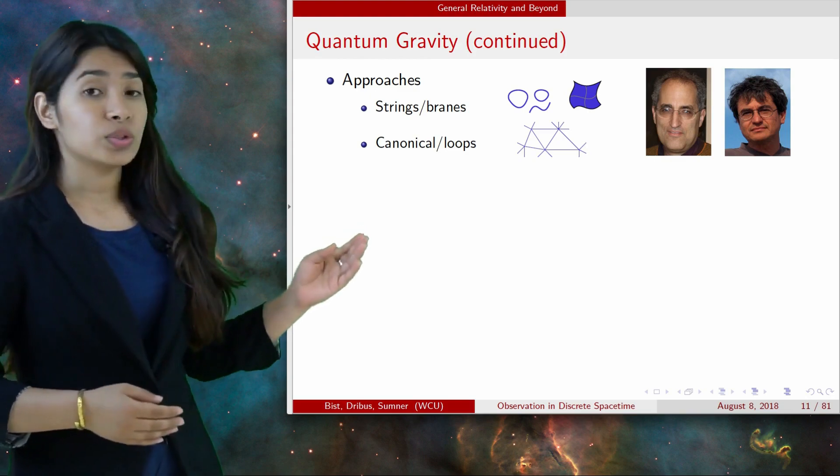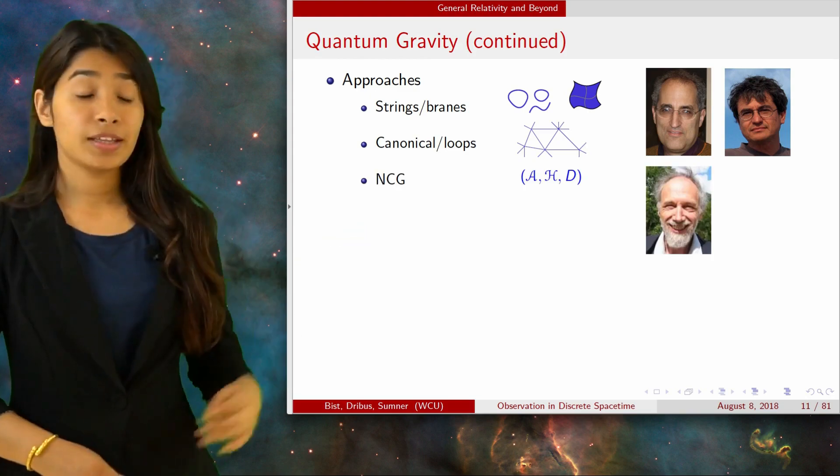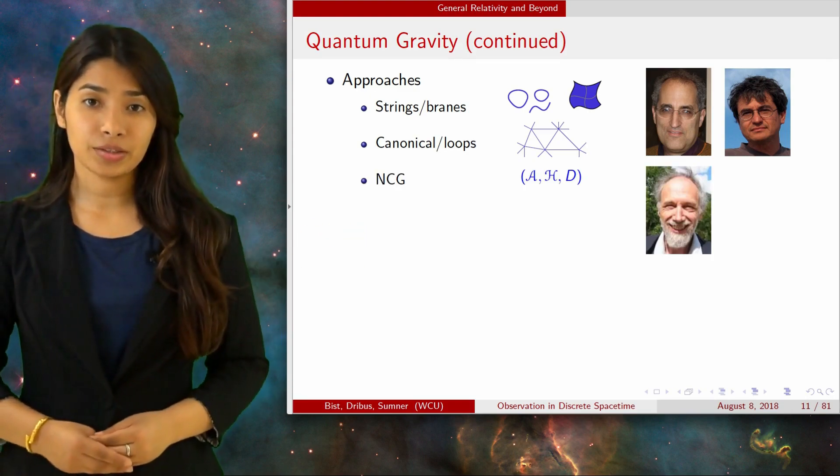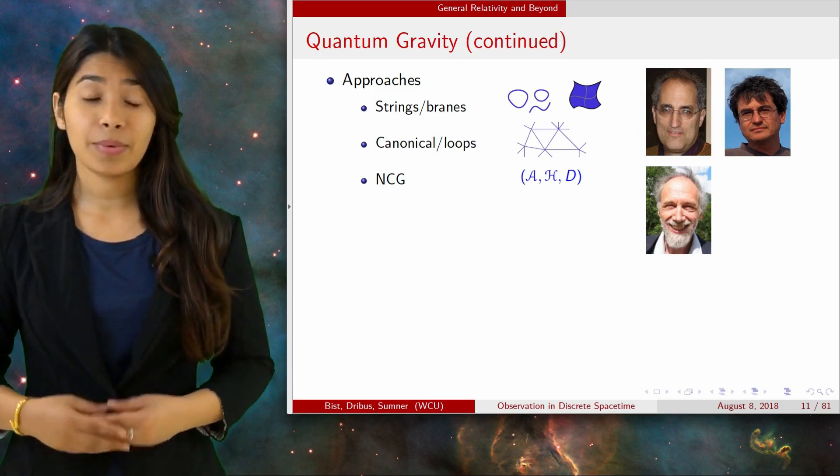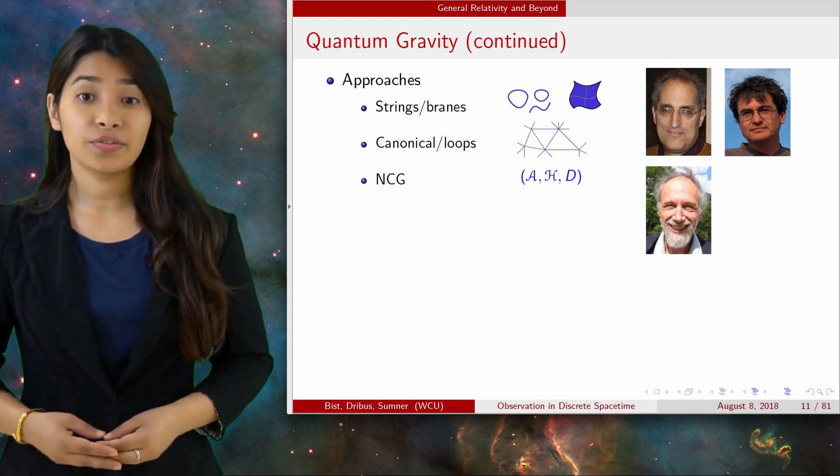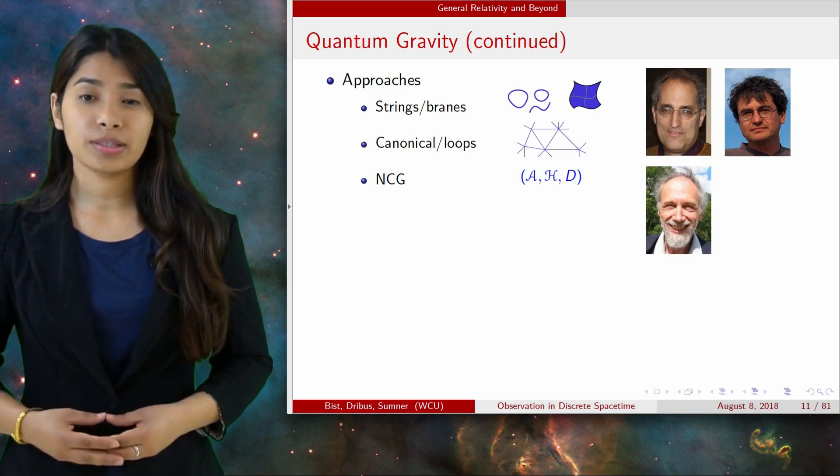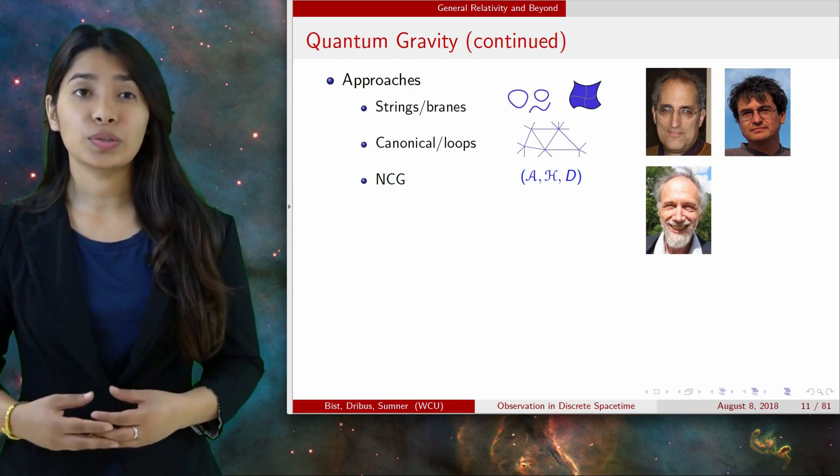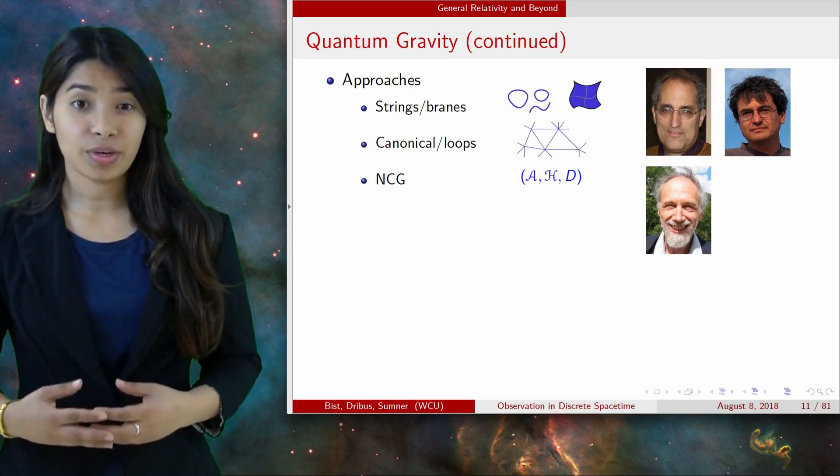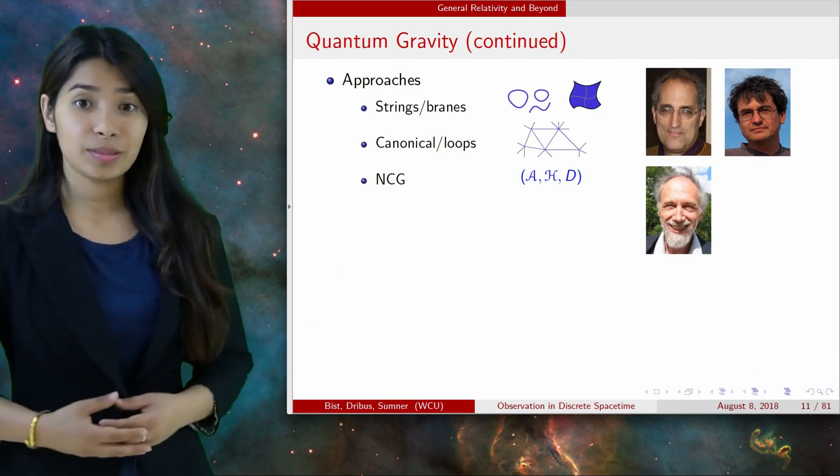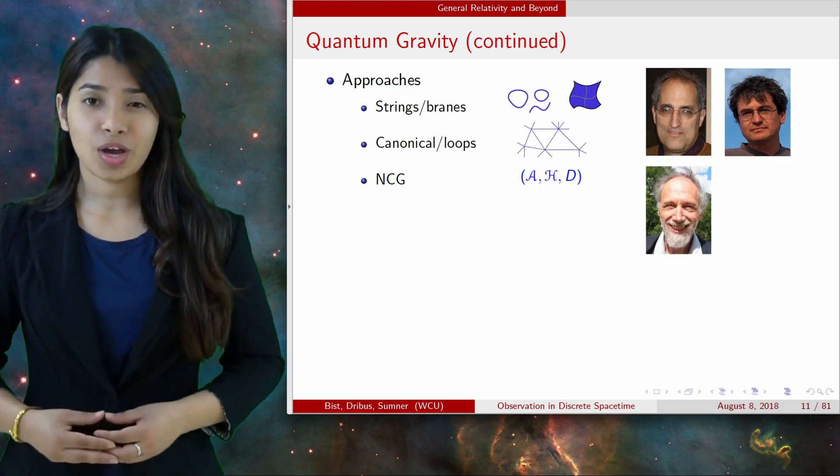And then there is Alain Connes's non-commutative geometry. This picture here shows a spectral triple. This is off-topic, but the idea is that Grothendieck had described how certain types of geometries are locally equivalent to commutative algebras, and Connes extended this to include non-commutative algebras. So this is an algebra of operators acting on a Hilbert space together with a distinguished operator.